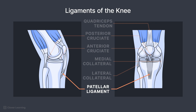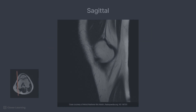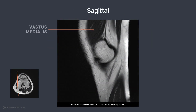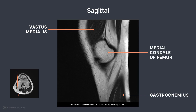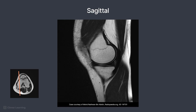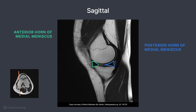Let's take a look at the anatomy on some MRI images, starting with the sagittal plane. Starting from a medial position, the vastus medialis muscle is seen on the anterior portion of the upper leg. On the lower leg, we can see the gastrocnemius muscle. The medial condyle of the femur is demonstrated. As the slices move laterally, the anterior and posterior horn of the medial meniscus is well demonstrated.